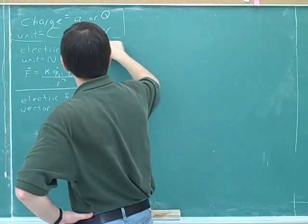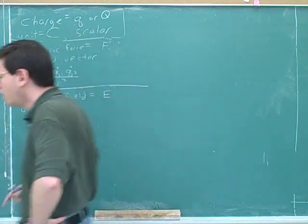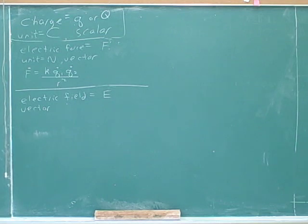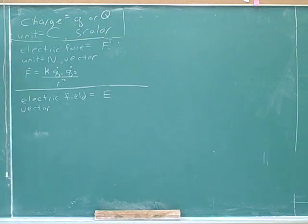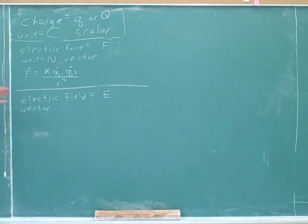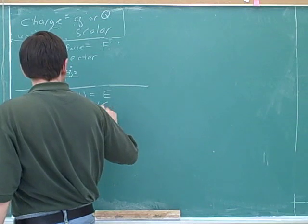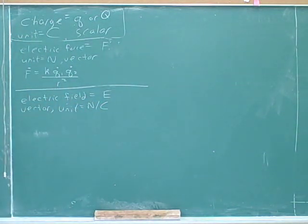This is where students start to lose intuition, especially for electric fields, so we'll try to make this more intuitive. One of the keys to getting intuition for this concept is knowing the units — it is crucial to memorize the units. The units for electric field are newtons per Coulomb. The electric field is a vector.